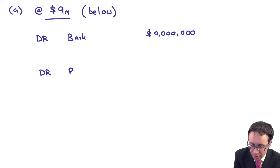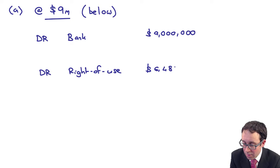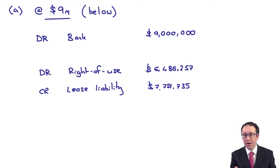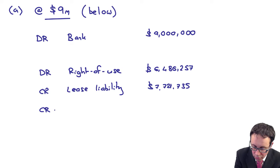What we're going to do is we will still debit that right-of-use asset with the 6,486,257. We still credit the lease liability with the 7,721,735 because that's effectively what you would be looking at with regards to the rentals being at market rates.